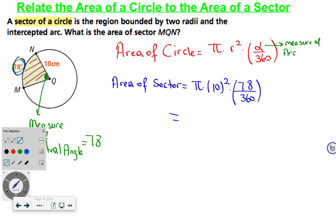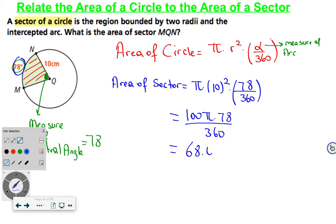10 squared is 100. So we get pi times 100 times 78 over 360, which means 7800 times pi over 360, which is equal to approximately 68.07. So this is the area of sector MQN.